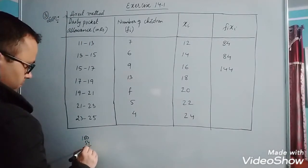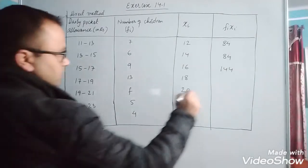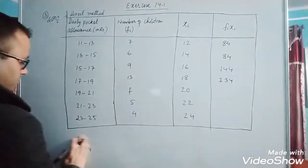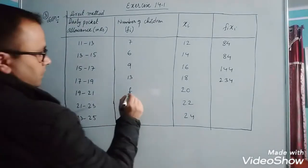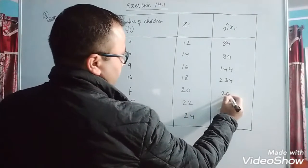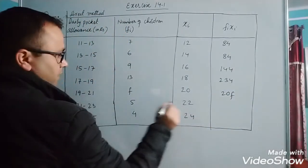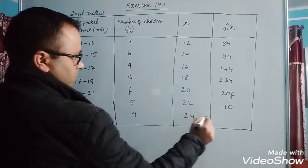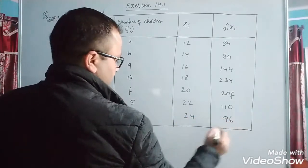f into 20 is 20f. 5 into 22 is 110. 4 into 24 is 96.